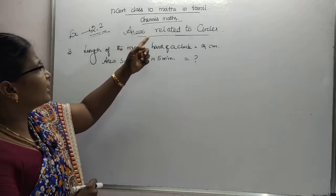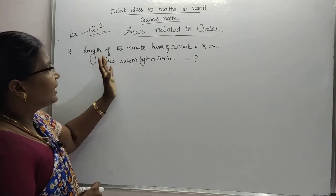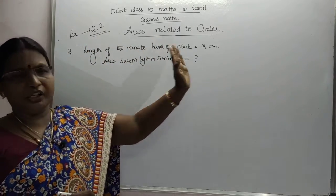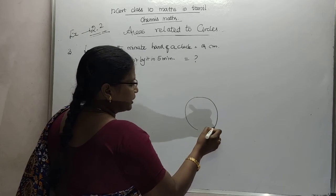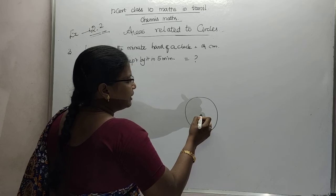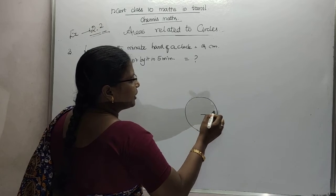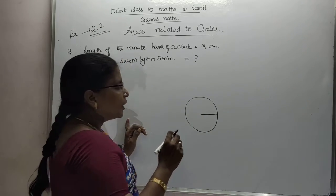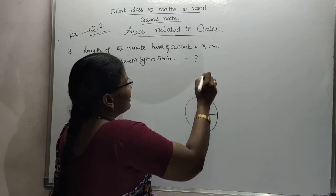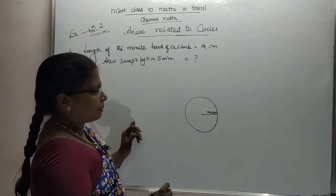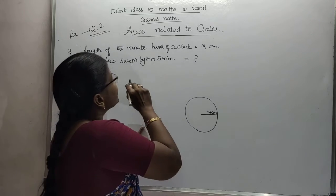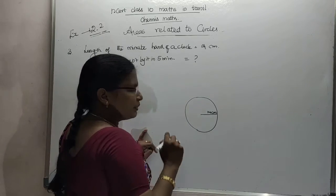Listen dears, chapter related to circles, 12.2, third sum. Length of the minute hand of a clock is equal to 14 centimeters they have given. Then in a clock, the length of the minute hand is equal to 14 centimeters. Next, the area swept by it in 5 minutes.